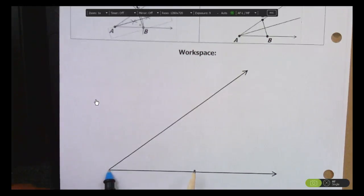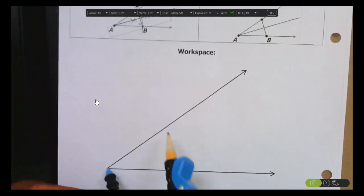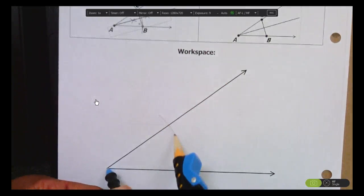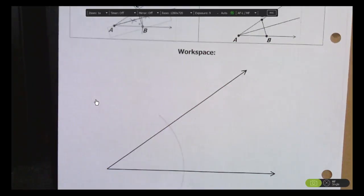Now it doesn't matter exactly how big your compass is right now. But draw yourself an arc that intersects both sides of the angle like that.